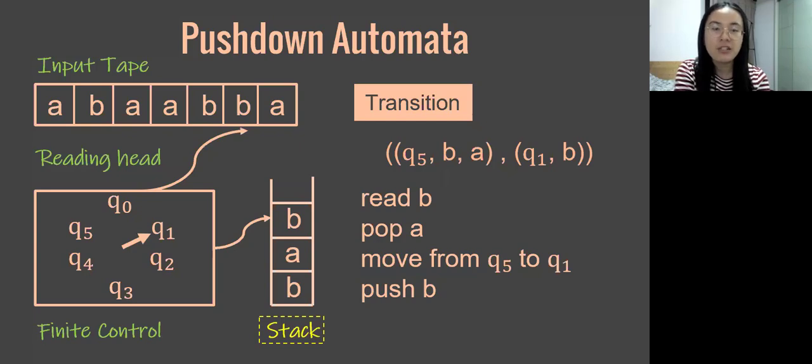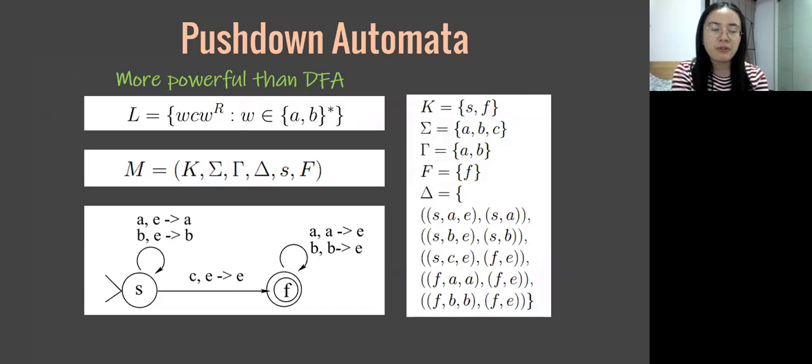Here in the illustration, after the transition, the machine looks like this. As mentioned before, what PA accepts is a context-free language, and we can always construct a PA for a context-free language. As shown in the state diagram, the PA accepts strings that look like A, B, C, B, A, which is impossible for the DFA. PA is indeed a more powerful model than DFA.